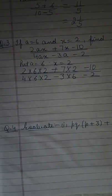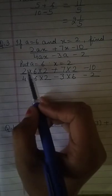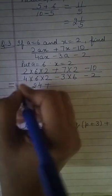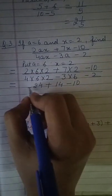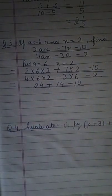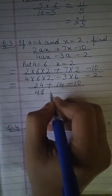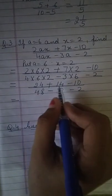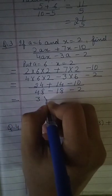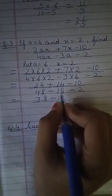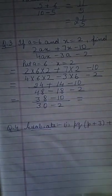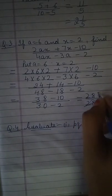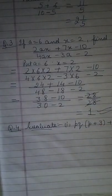Now we know according to BODMAS rule we have to multiply first. Let's do it. 2 times 6 is 12, 12 times 2 is 24, plus 7 times 2 is 14, minus 10 written as is. 4 times 6 is 24, 24 times 2 is 48, minus 3 times 6 is 18, minus 2. Next step: 24 plus 14 is 38. 48 minus 10 is 38 minus 2. 38 minus 10 is 28. In the denominator 30 minus 2 is 28. 28 will be cancelled out with 28. I'm getting 1 as my answer. Is it clear?